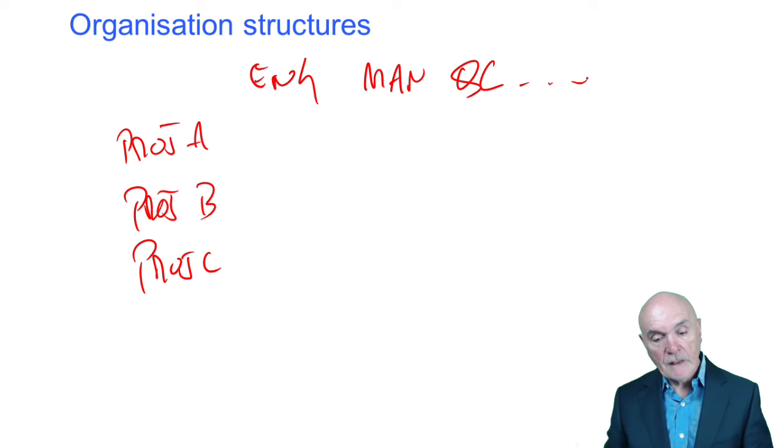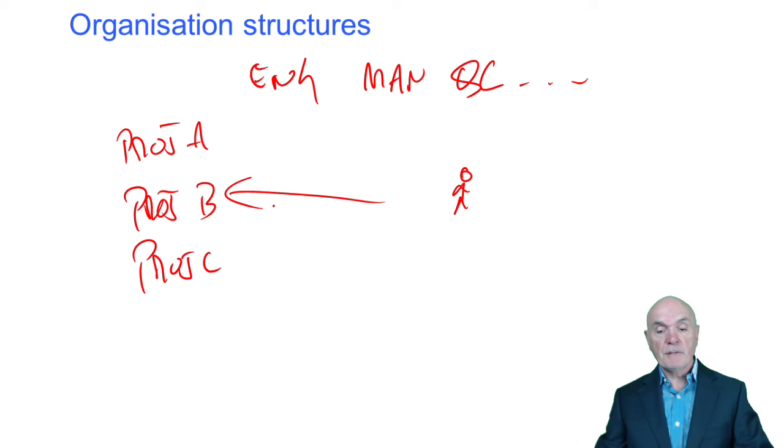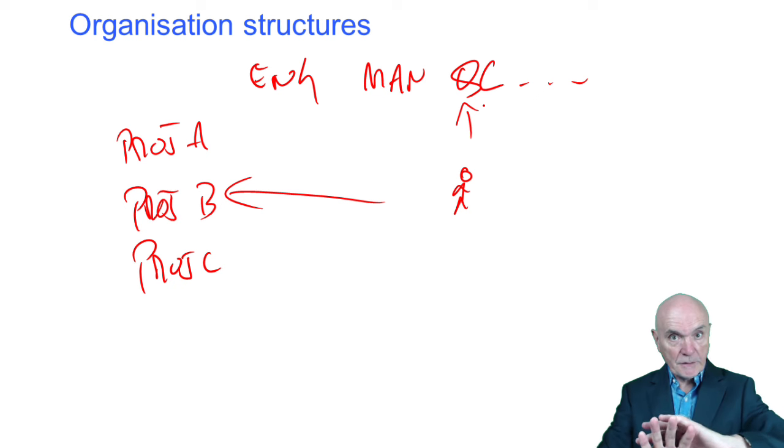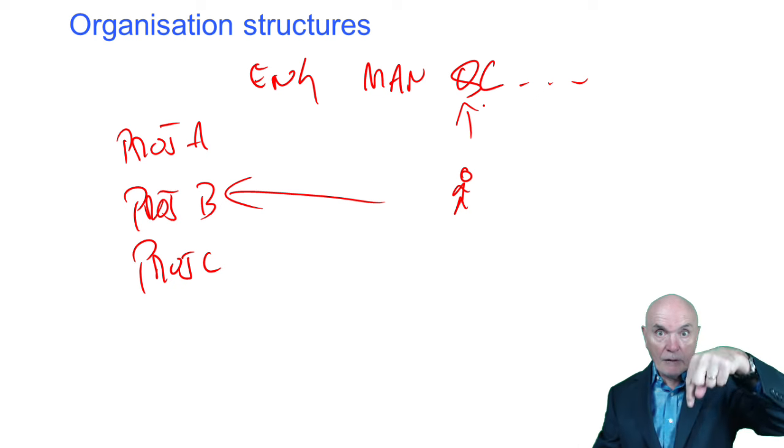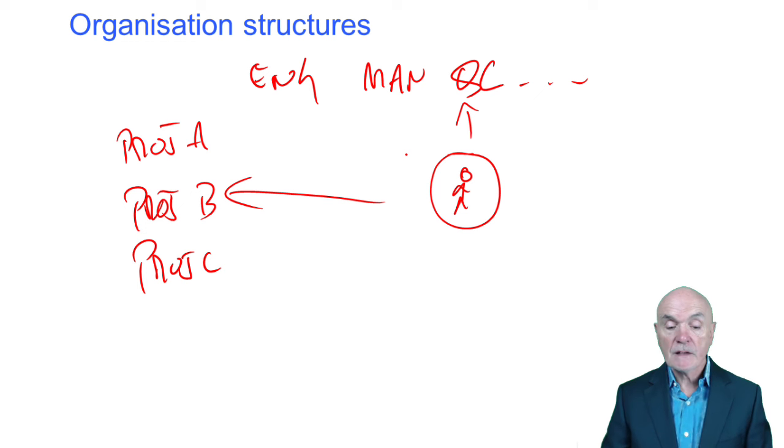And what we have, for example, is a quality control person who's working at the minute on project B and who reports to the quality control manager. So this sets out a kind of two-dimensional matrix rather than just going down within one department all the time. And this recognizes that this person has got dual responsibilities. The responsibility of the project B manager to make sure they want to help the project coming in on time and to the right quality. And a kind of technical responsibility to quality control to make sure that the building, the production, whatever it is, is of the right quality.